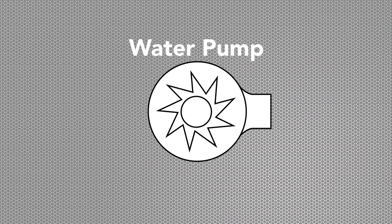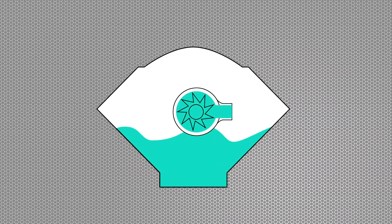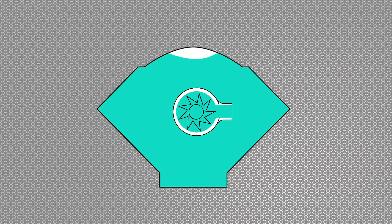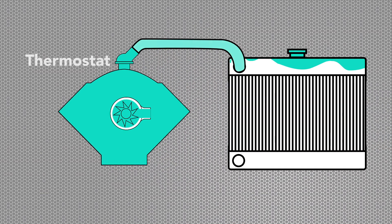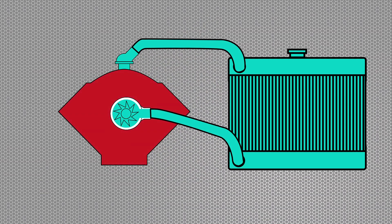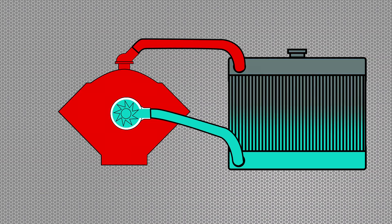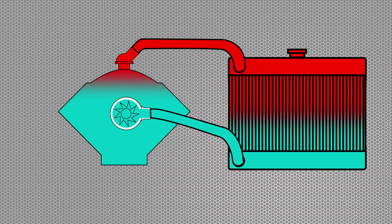The coolant flow starts at the water pump, flows through the engine block, through the thermostat, through the radiator, and back to the water pump. As the coolant flows through the system, it picks up heat in the engine and flows to the radiator where it is cooled and then returns to the engine.